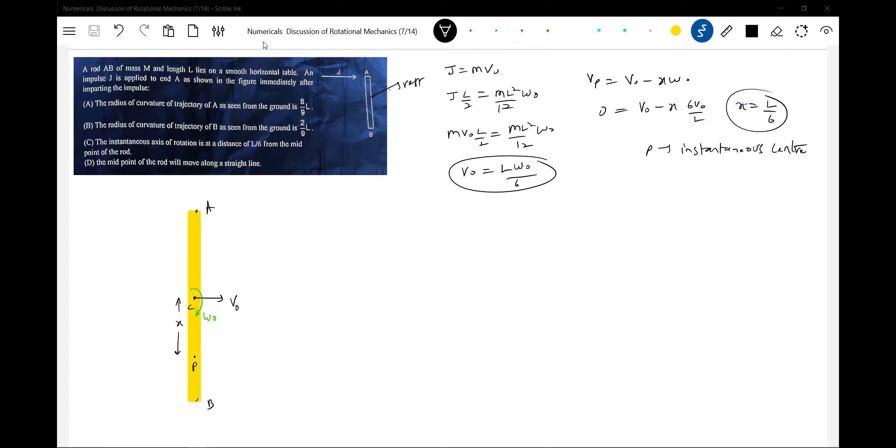Sir, at point A velocity will be... Okay, what about acceleration? Acceleration is omega square r. No, omega naught square r. What is r? Sir, r is l by 2?